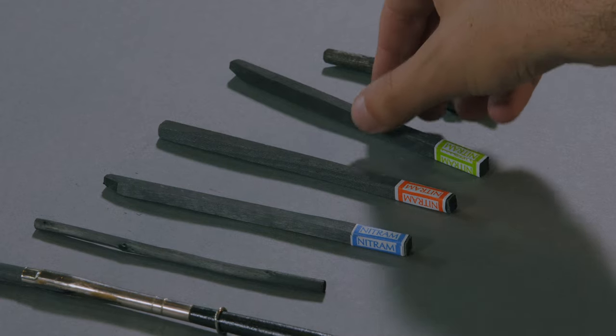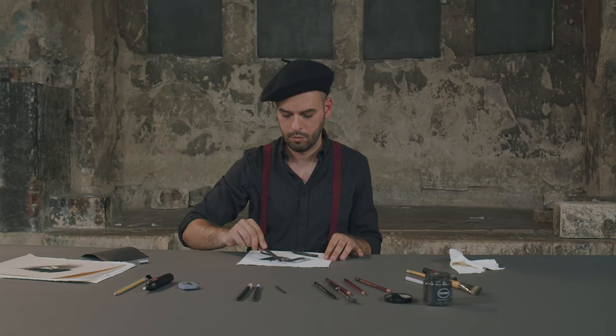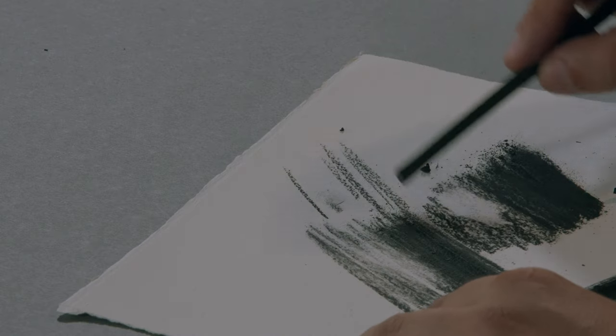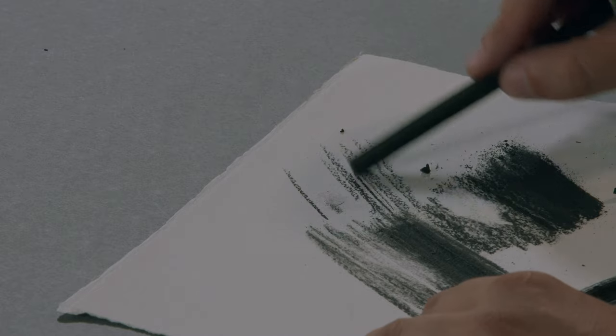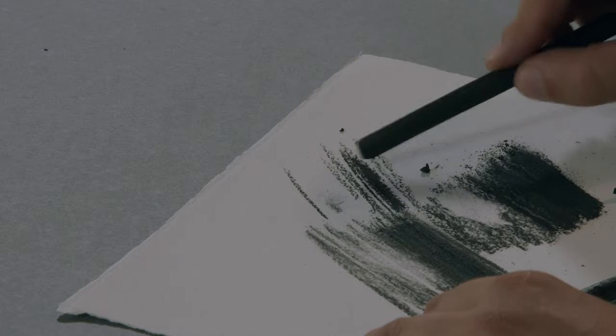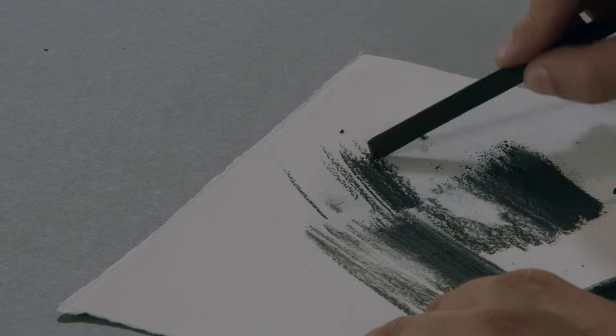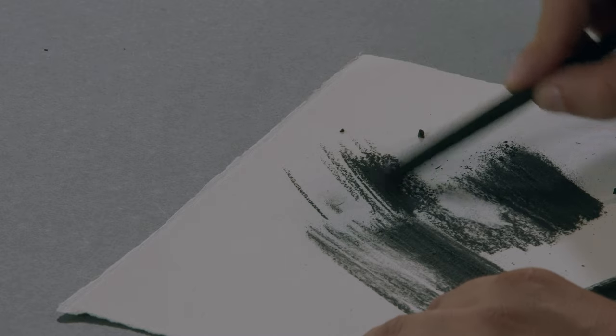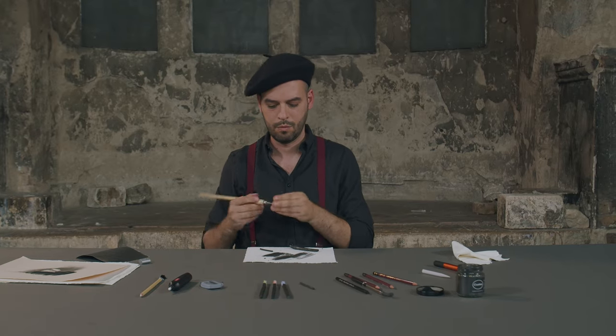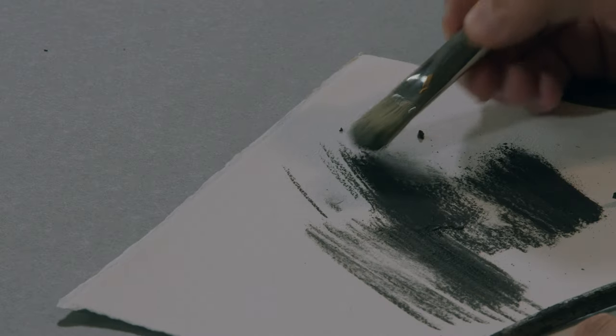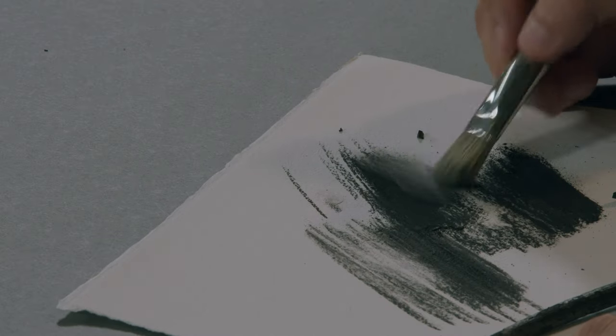Nitram charcoal can hold a point for detail when sharpened. It provides darker and browner shades than both vine or willow charcoal. It's easy to smudge with a hard brush.